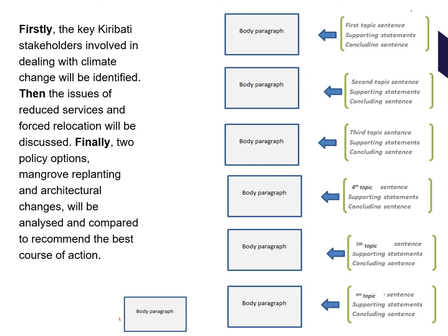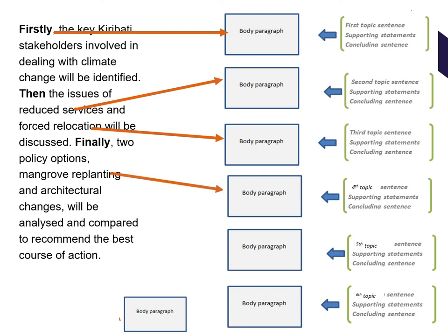You've written the introduction and now you're doing the body of the essay. How many paragraphs might you need? You need to discuss the key Kiribati stakeholders involved in dealing with climate change and identify them, then talk about the issues — in this case, reduced services and forced relocation. Then look at two policy options and compare them before making a recommendation. All the while, remember the structure of a paragraph: topic sentences, supporting statements, a concluding sentence, and what you're using to support your arguments.